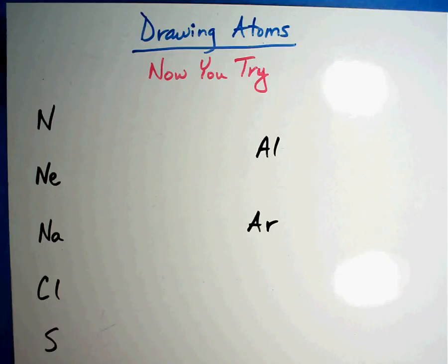Alright, we were just drawing atoms in the last session. Now it's your turn to try it. Here are seven atoms. Look them up on your periodic table, get the numbers, and draw the atoms with the electrons in each of the rings. Go ahead and pause the video. We'll see how you did.